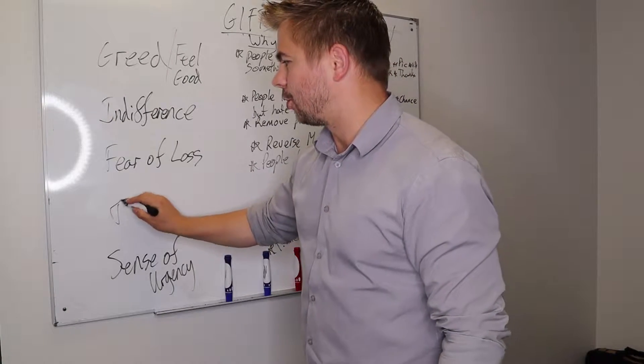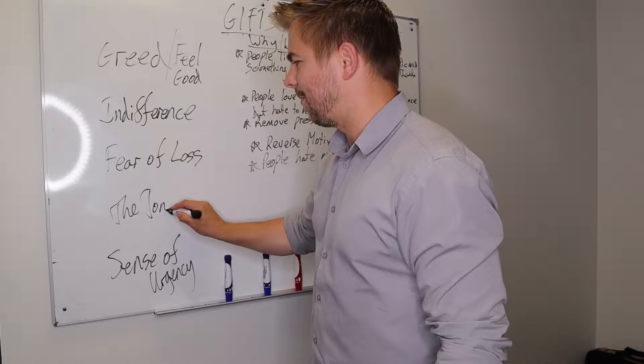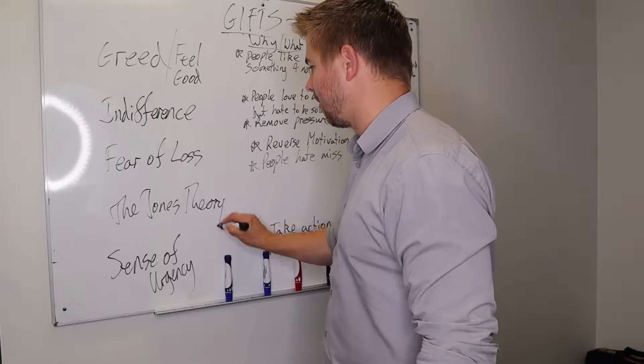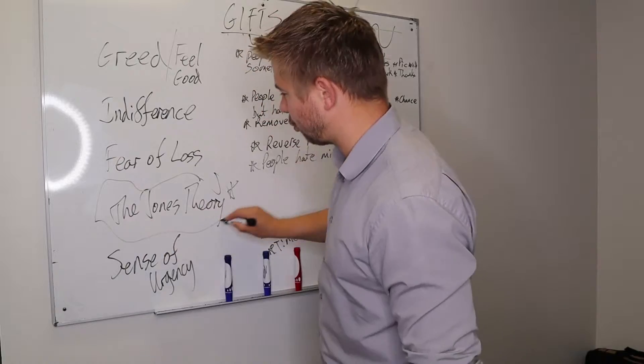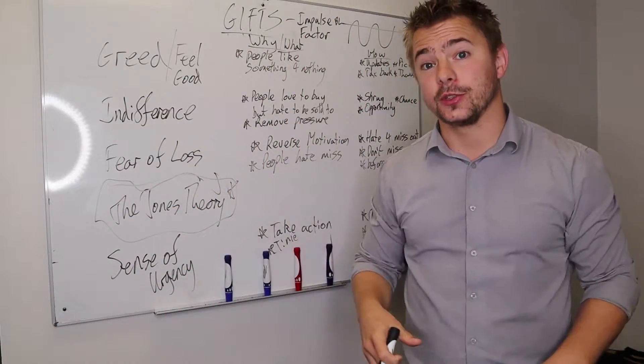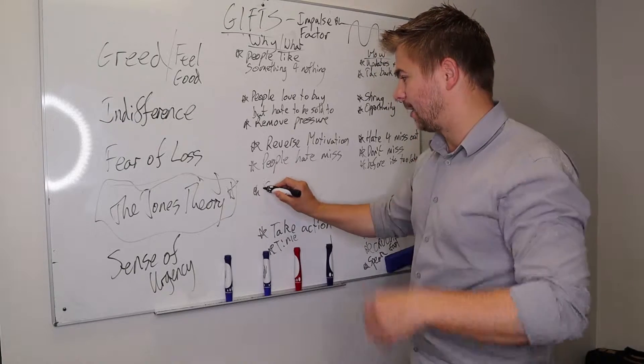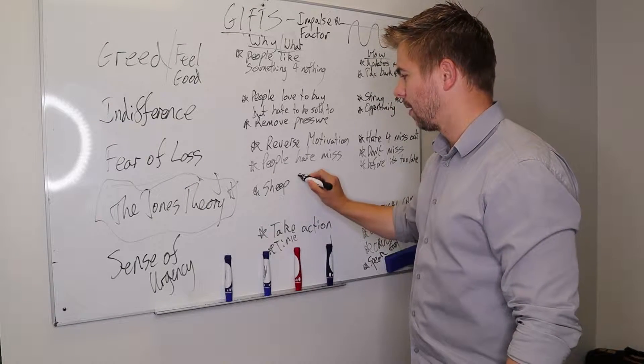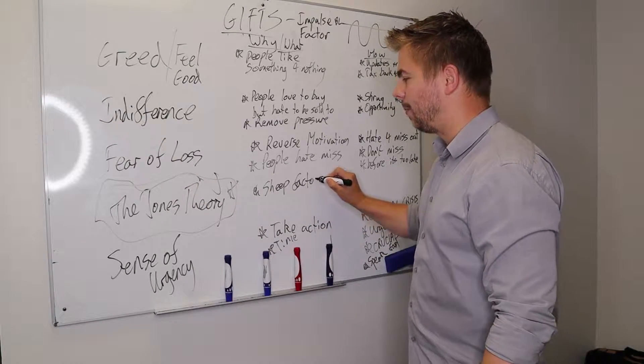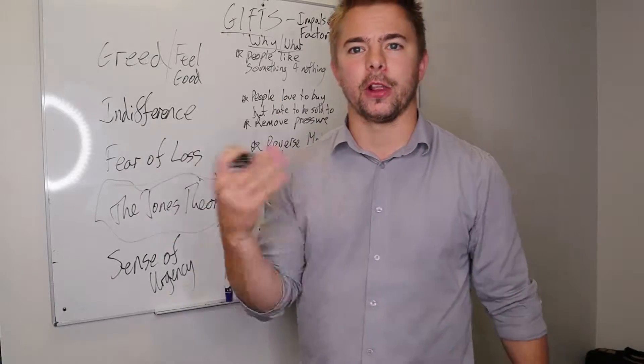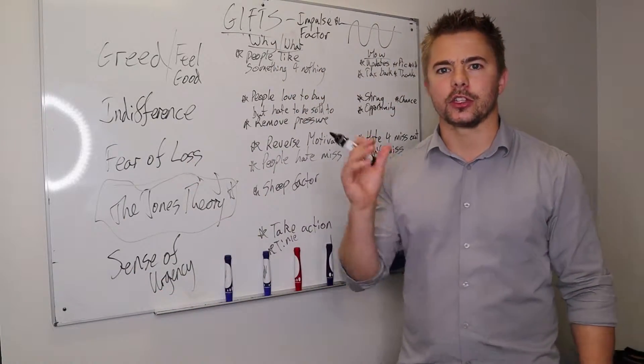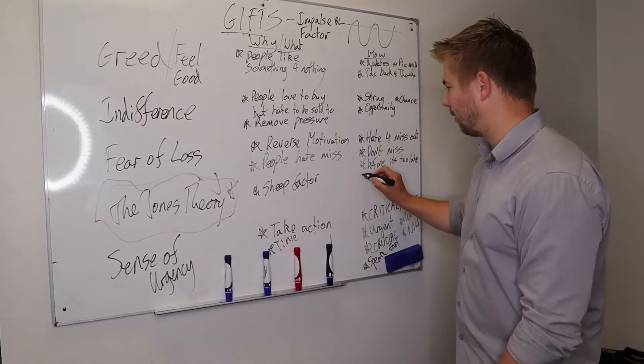And the last but not least, the Jones theory. The reason I'm saving this one till last is because I believe that this one is the most powerful one. Put big stars around it and use it. It is the most important one out of all the gifts. It is the sheep factor. People will do what other people are doing. People just follow. We're like sheep. So as soon as someone else is doing it, we'll do it. It's in everything and walks of life.